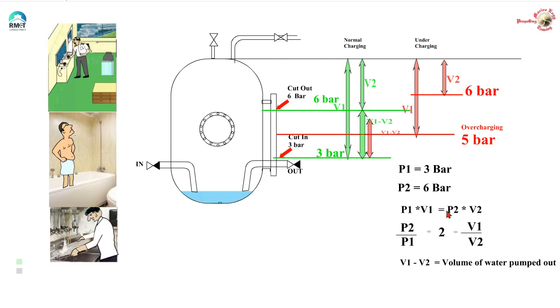We all know the gas laws. P1 V1 is equal to P2 V2. Taking the example of our particular range that is 3 bar cut in and 6 bar cut out, P1 and P2 are 3 and 6. That means P2 by P1 is equal to 2, ratio is 2. V1 by V2 is also going to be 2. And we also know that V1 minus V2, the volume of water pumped out. That means as I increase the level of water in the hydrophore and adjust the cut in pressure, the value V1 minus V2 is going to be lesser and lesser. Meaning which the pump is going to cut in, cut out more often and we are going to damage the pump. In other words, the ratio goes on decreasing and thus increase the short cycling of the pump.